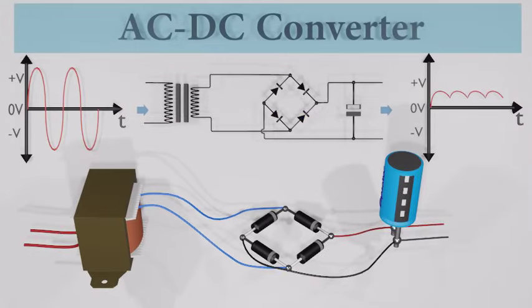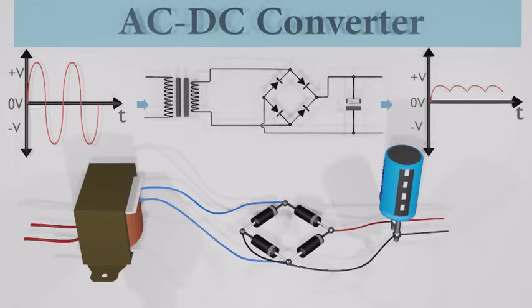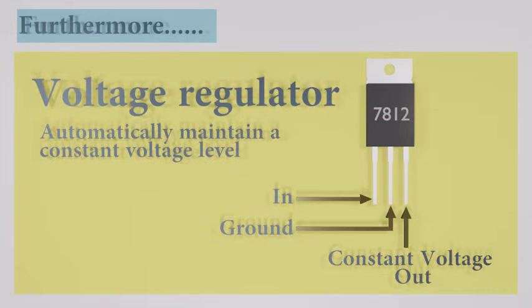But still our DC output signal has slight variations, we call this ripples. If we want to smooth it furthermore and regulate voltage at a constant level, we can use a voltage regulator IC. It's basically a three pin IC. This is the final step of the AC to DC conversion process.